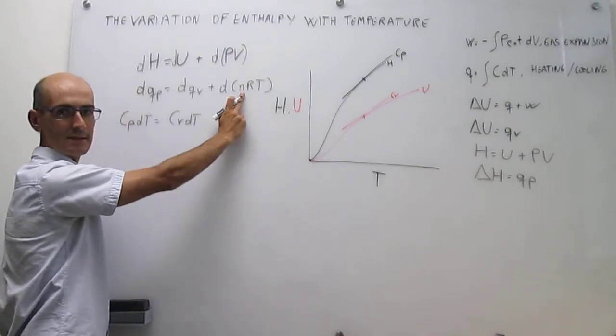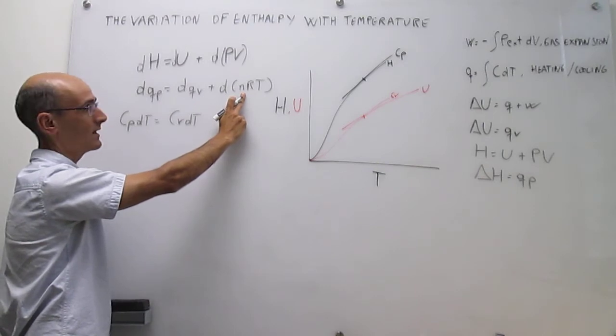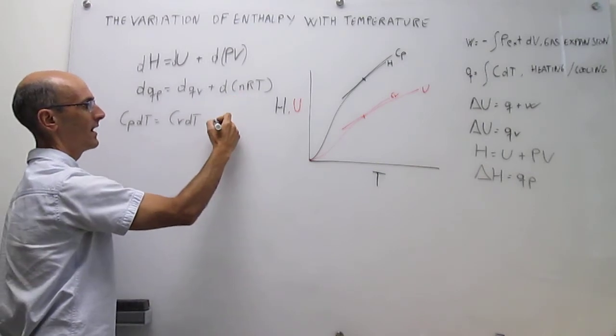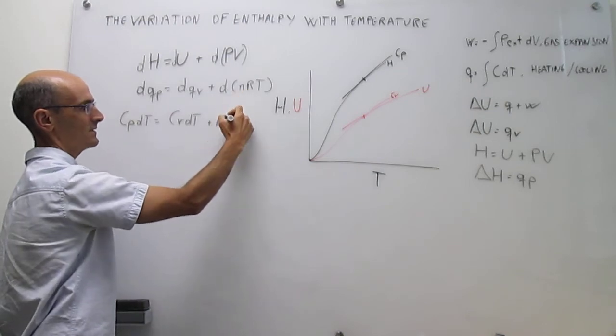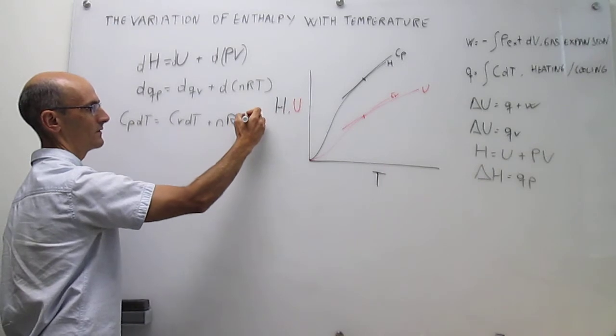We assume that this is a closed system, so there's no change in the moles of gas. Then we can take that n out of the differential, and then r is a constant, so we can take it out of the differential, and you simply have differential of T.